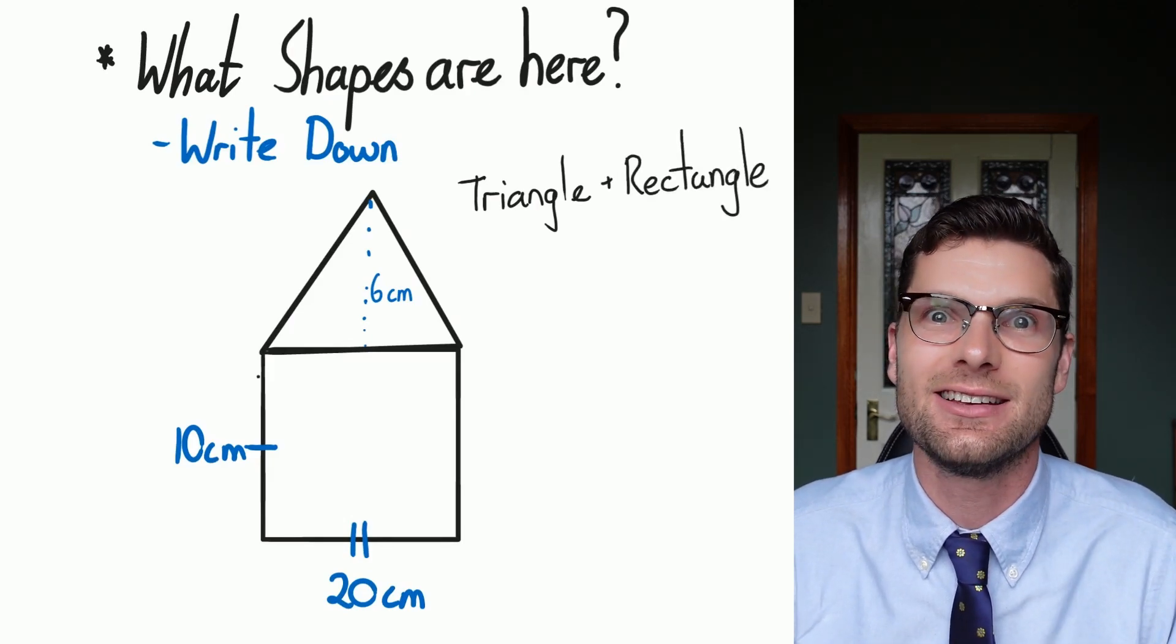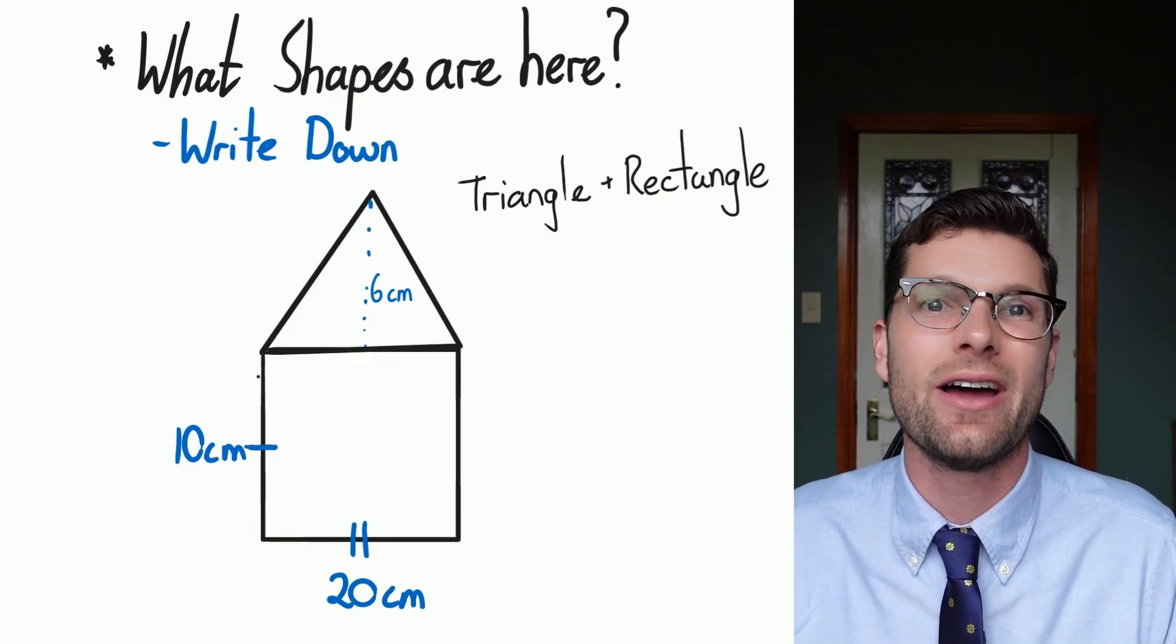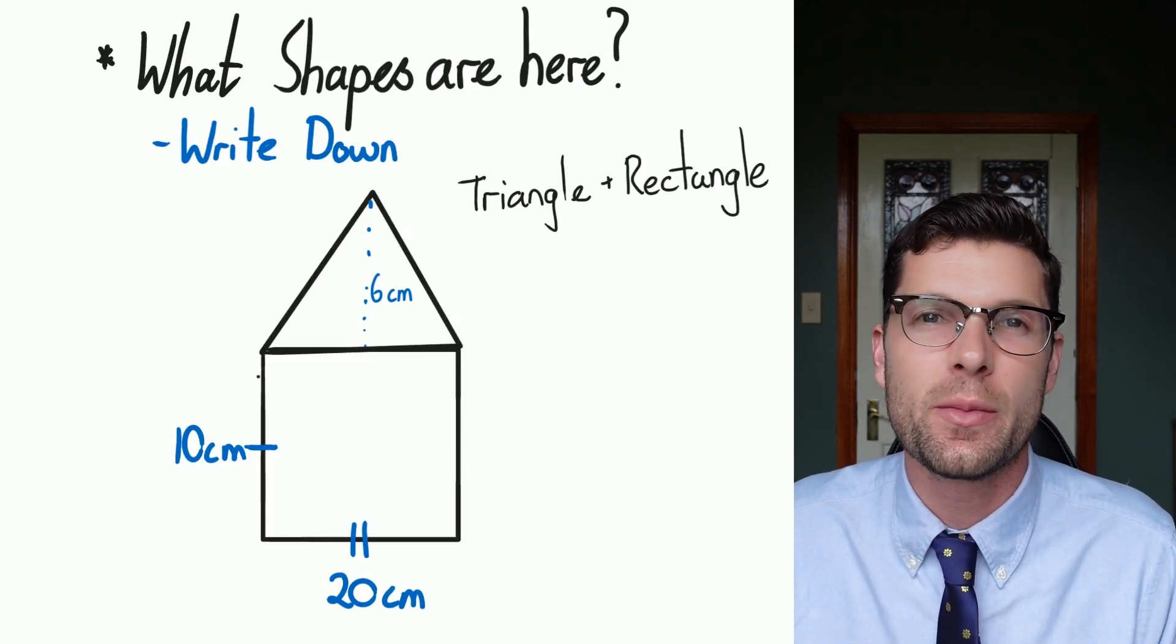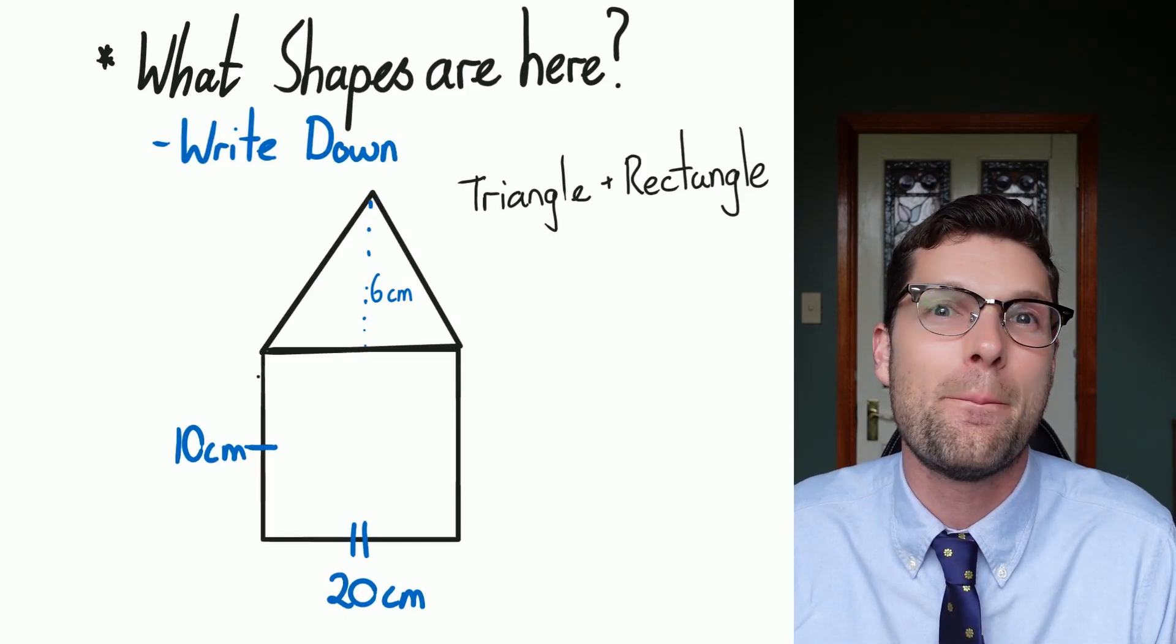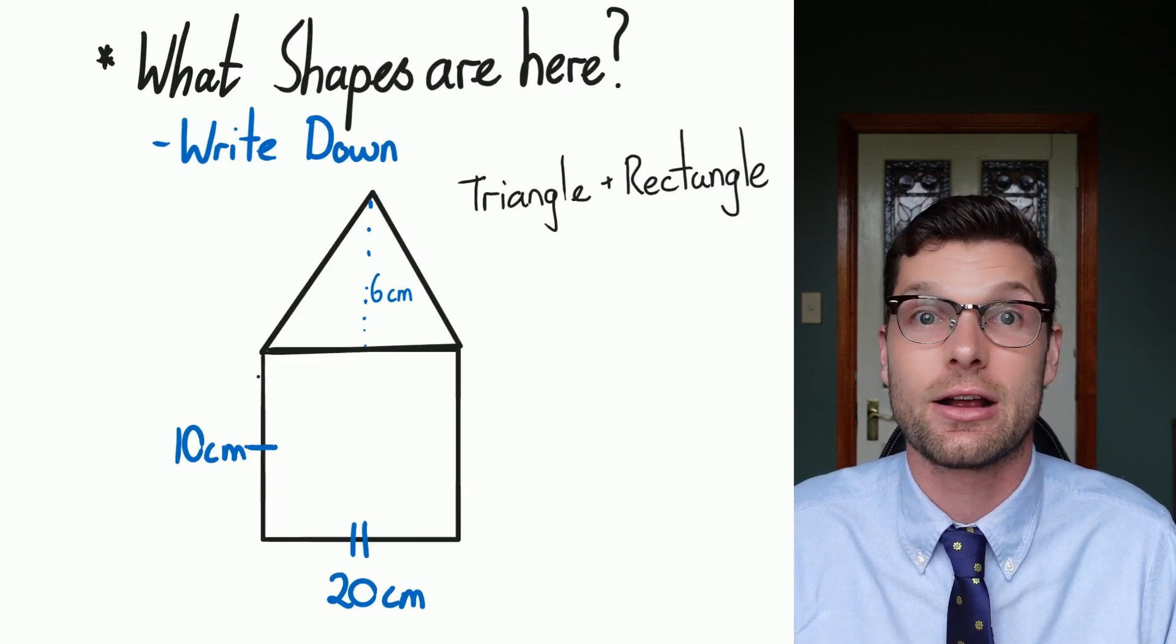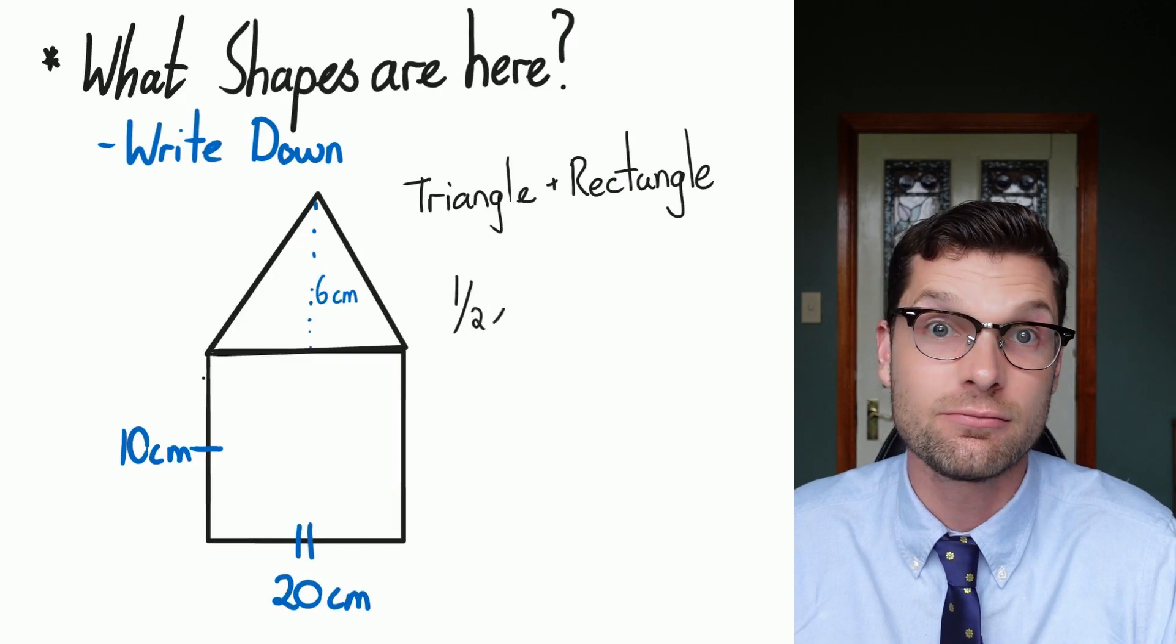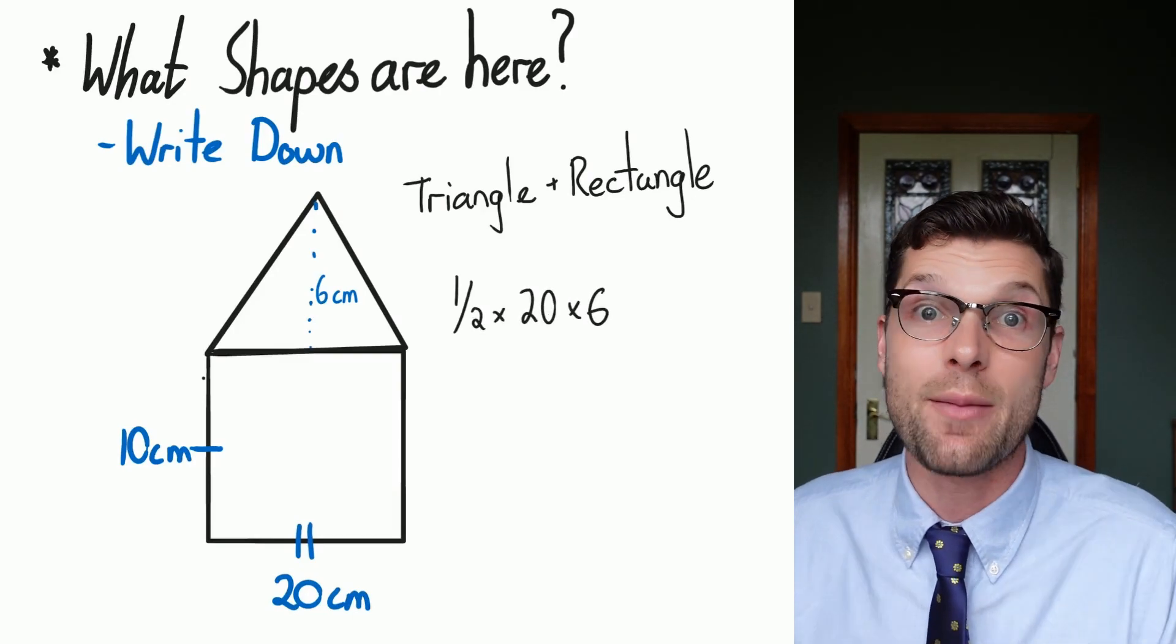Once you've done that you've basically done this topic. So all I've got to do is find the area of each one and then add them together just like that formula says. So the formula for that triangle there, it's gone up 6 so its height is 6 and the base down the bottom is 20. Remembering that the formula for a triangle is a half times the base times the height, I've got a half times 20 times 6. That's one part of my equation.